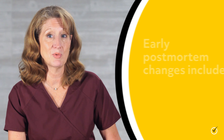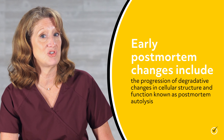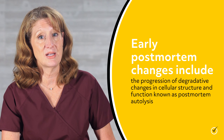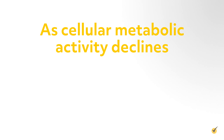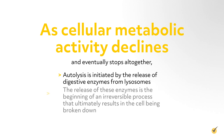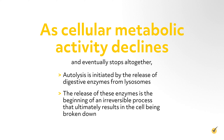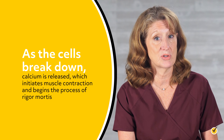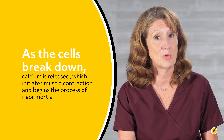Early postmortem changes include the progression of degradative changes in cellular structure and function known as postmortem autolysis. As cellular metabolic activity declines and eventually stops altogether, autolysis is initiated by the release of digestive enzymes from lysosomes. The release of these enzymes is the beginning of an irreversible process that ultimately results in the cell being broken down. As the cells break down, calcium is released, which initiates muscle contraction and begins the process of rigor mortis.